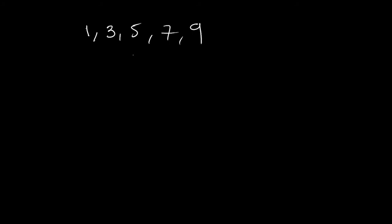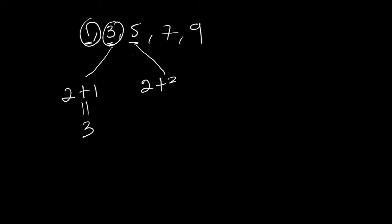You can obviously see that this is the first term of the list, this is the second, the third, and so on. To get the second term, which is 3, we added 2 to the previous term which is 1. To get 5, you add 2 again to the previous term which is 3. It follows a certain pattern — to get 7, we just add 2 to the 5, and so on.